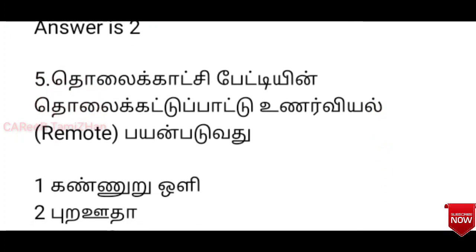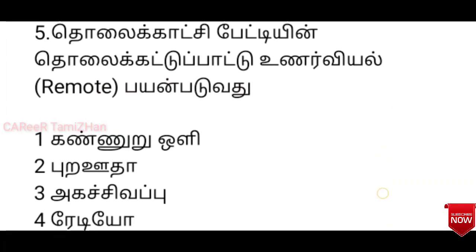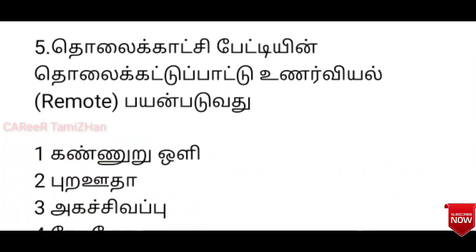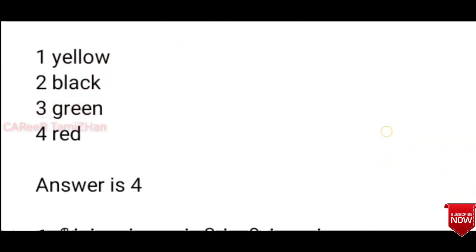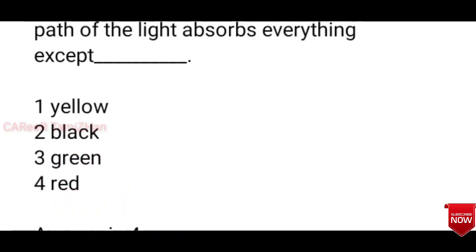Fifth question: A pure red glass plate, when placed in the path of light, absorbs everything except — options are yellow, black, green, or red. The answer is 4, that is red color. A red glass plate transmits only red light.